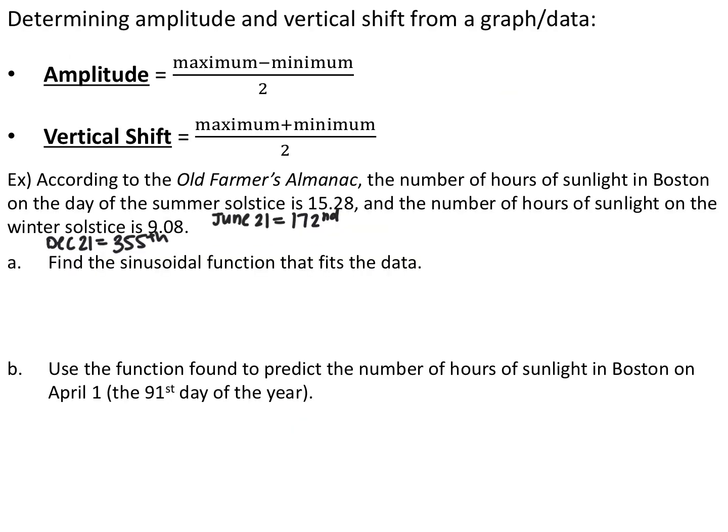We can use sinusoidal functions to model real-world situations based on maximum and minimum values. The amplitude is half the distance between maximum and minimum: (max - min)/2. The vertical shift is the equilibrium value, which is the average of the maximum and minimum: (max + min)/2.